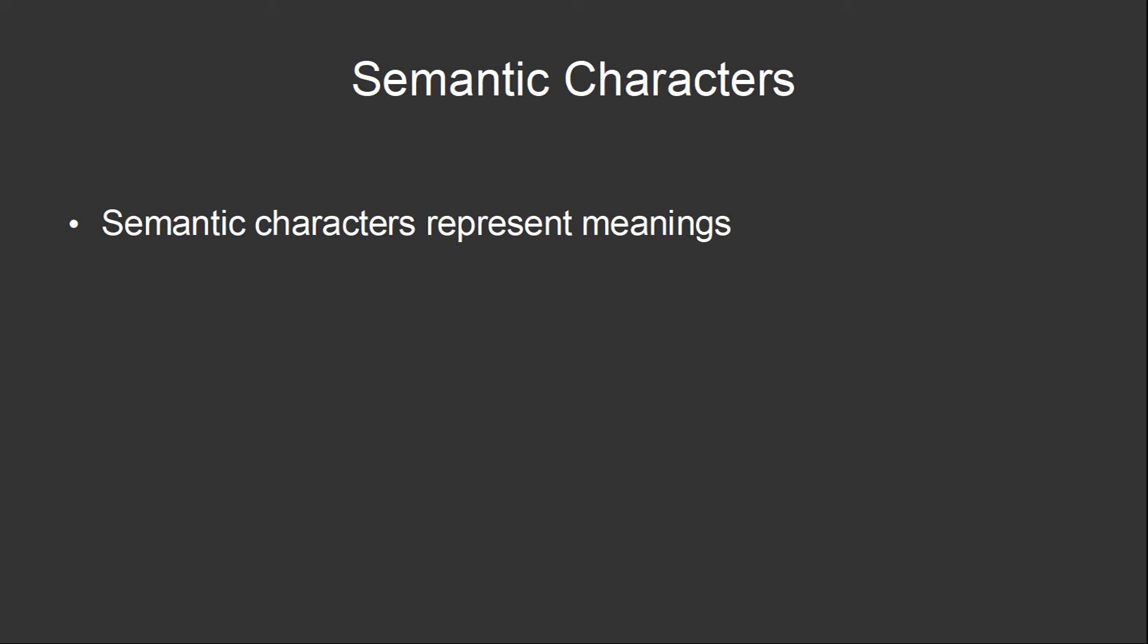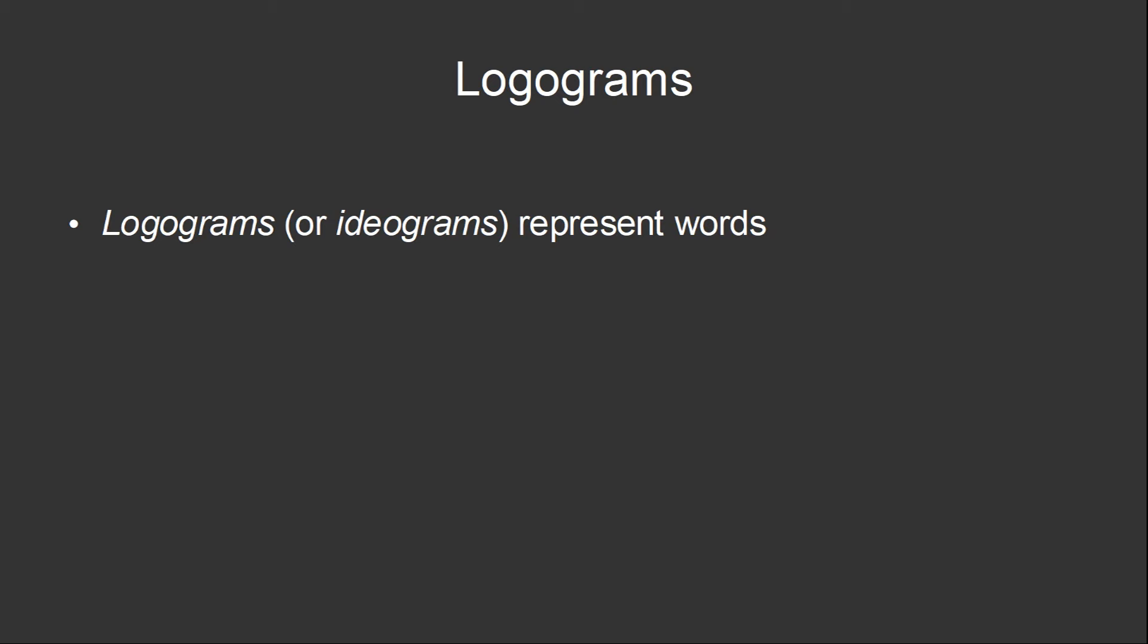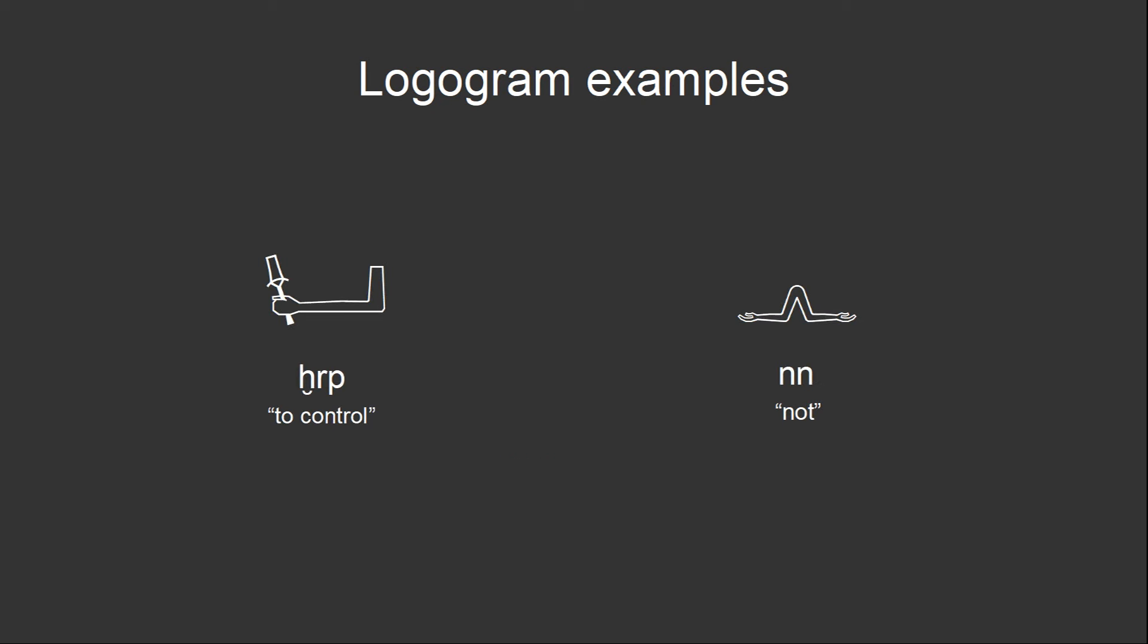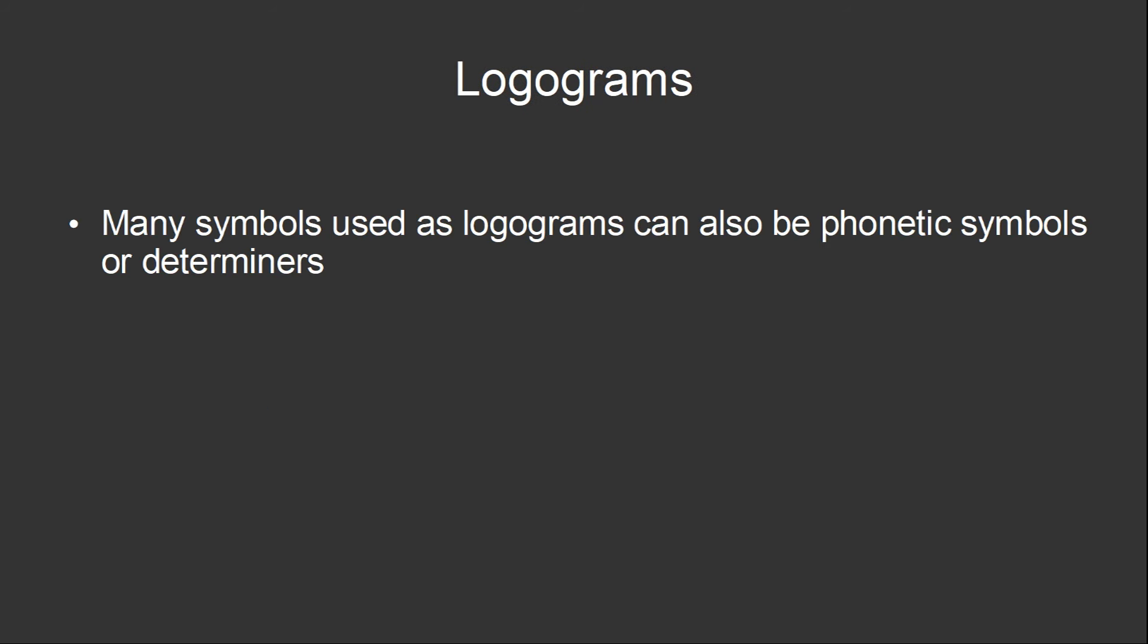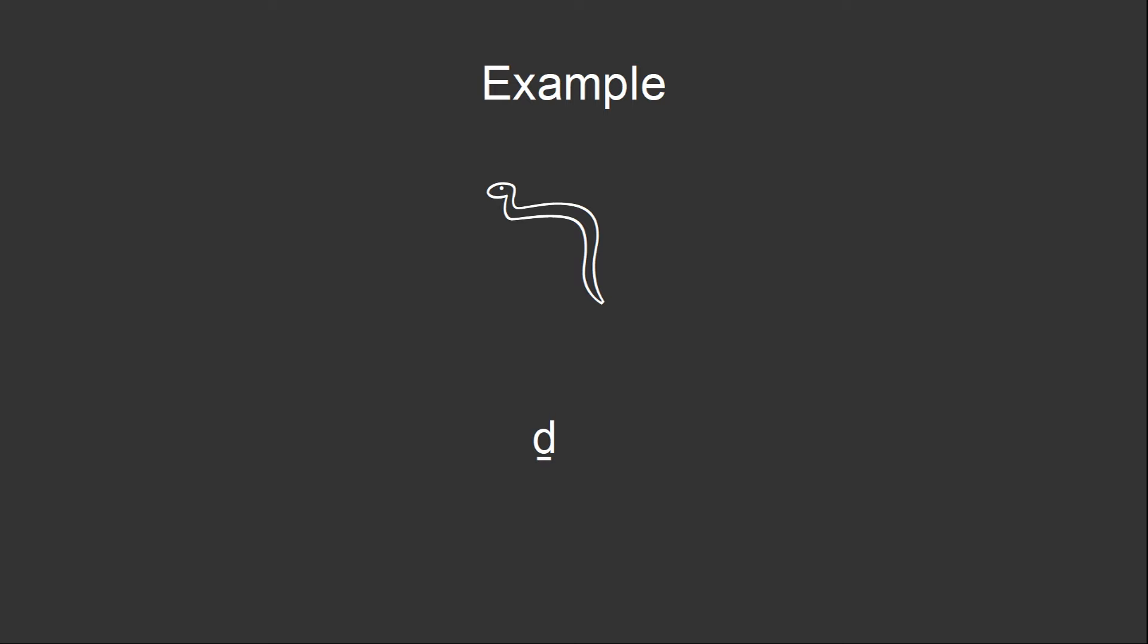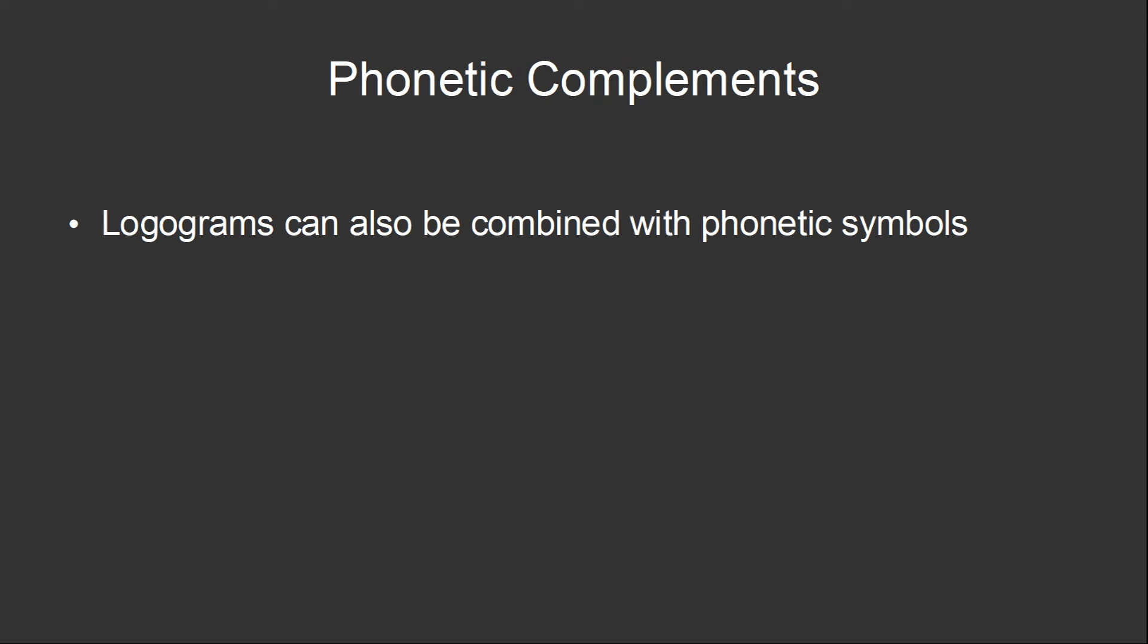The other kind of hieroglyphic symbols are semantic hieroglyphs. These represent meanings, and they can be divided into logograms and determiners. Logograms represent whole words. For many logograms, the meaning is pretty transparent. The character that looks like a man represents the word for man. The character that looks like a bull represents the word for bull. Three wavy lines represent water. For other words, the meaning is a little more abstract. An arm holding a scepter represents control, while two arms in a shrugging gesture represent not. Many hieroglyphs that are used as logograms can also be phonetic symbols or determiners. To unambiguously indicate that a symbol is meant to be a logogram, a small vertical stroke can be added near it. The cobra hieroglyph is usually a monoliteral sign for the sound dje, but with the addition of the stroke, it is the logogram representing the word cobra, or jet.